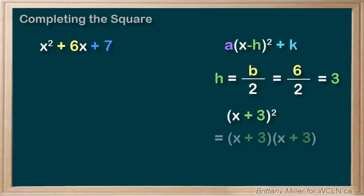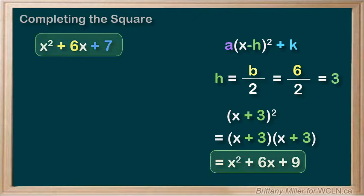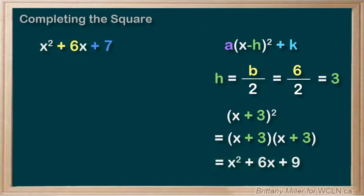Well, if we expanded it, x plus 3 squared is equal to x squared plus 6x plus 9. That's pretty close to what we have, so how can we make that? Well, why don't we just add a 9 into our equation? Is that allowed?